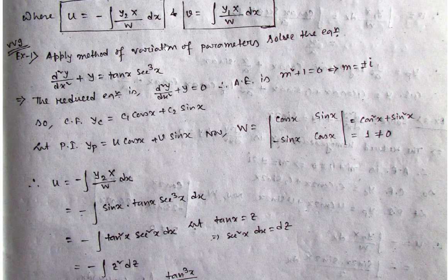Remember: if the exam specifically asks to apply variation of parameters, then you must use it. But even if it is not explicitly asked and the right-hand side has any function whose D operator rule (1 to 5) is unclear, you can directly apply variation of parameters. So first we find the complementary function (CF).